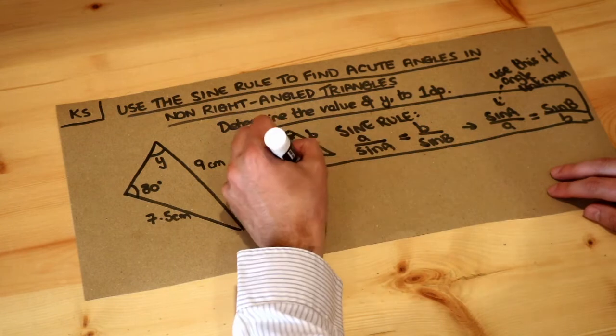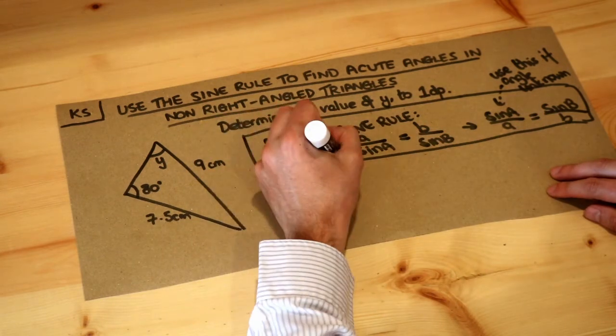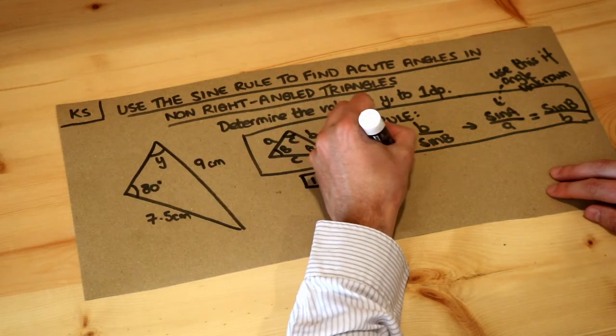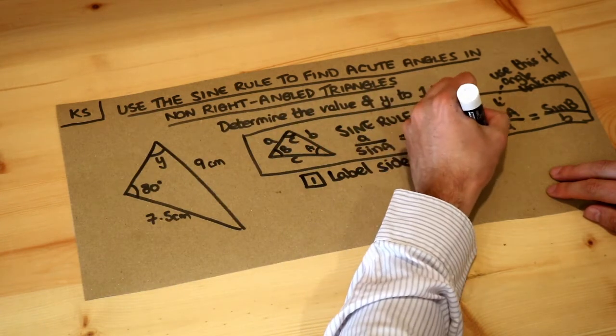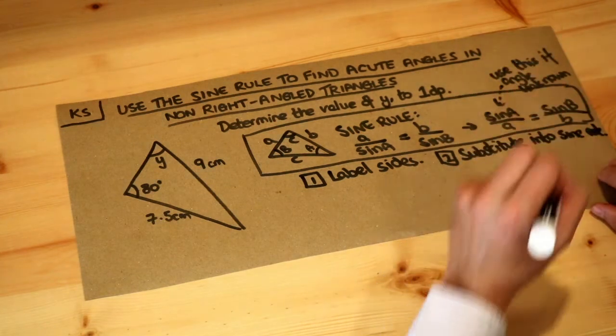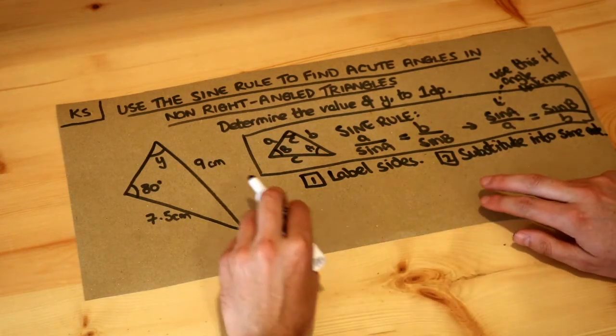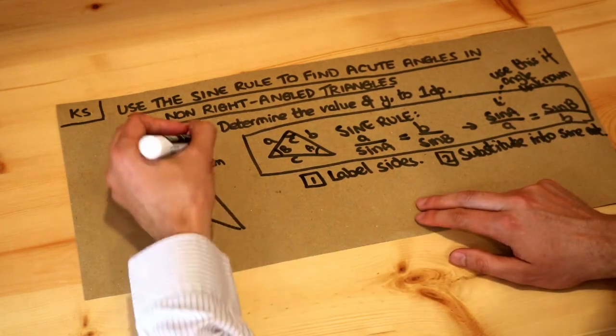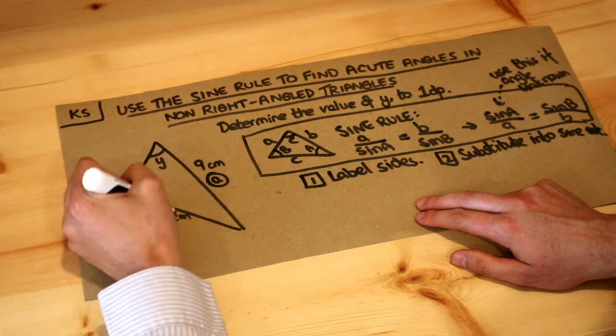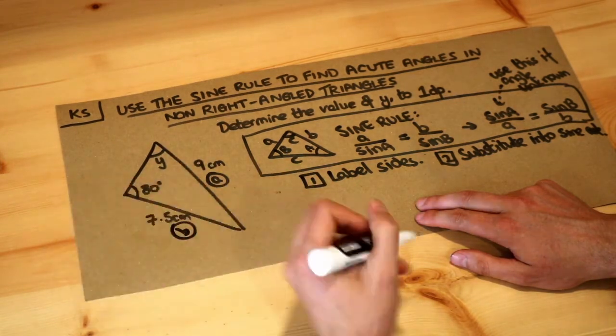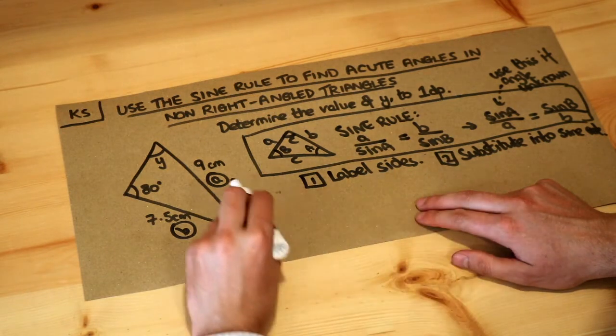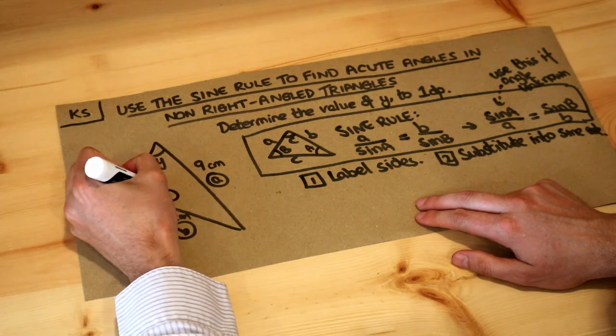The steps, as before, is to label your sides with the a, b, and c, and then step two is to substitute into the formula and then solve. So let's label the sides first. We want to use a and b, so this can be the side a, it doesn't really matter whether you make this a or this a, and then the other side b. We're not going to use c because we're not involving a third side.